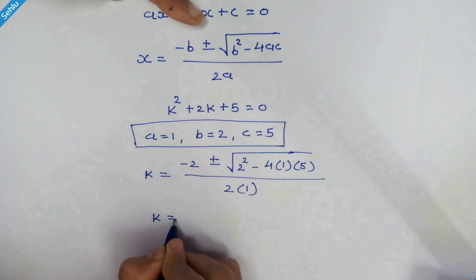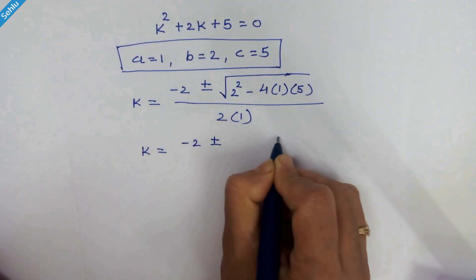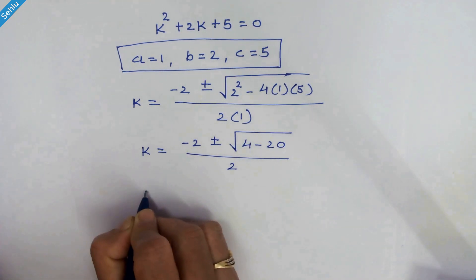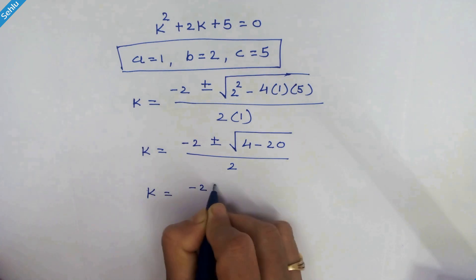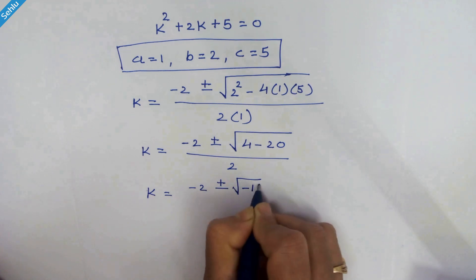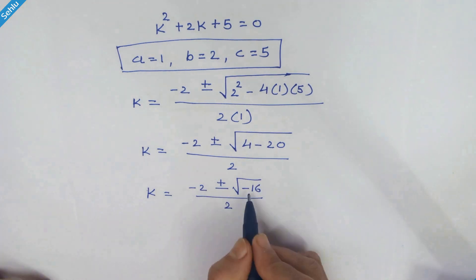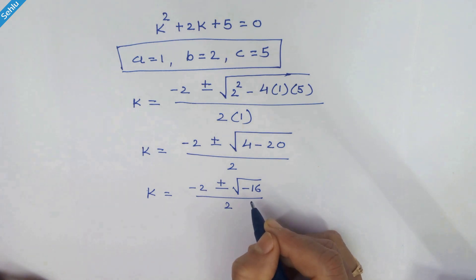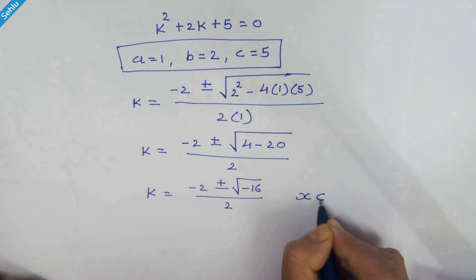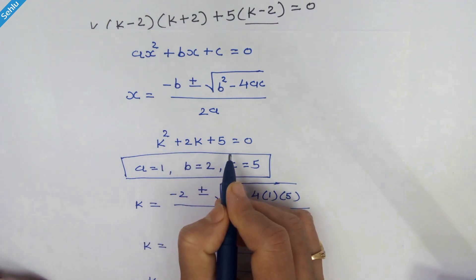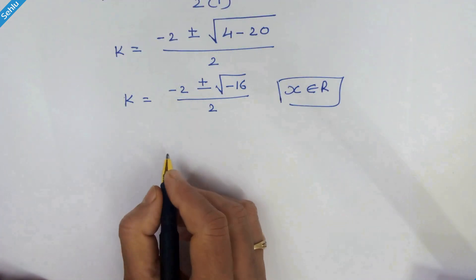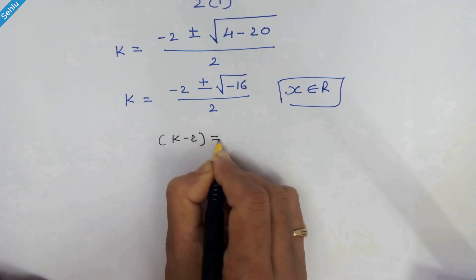So we have k equal to minus 2 plus or minus the square root of 4 minus 20, over 2. That gives k equal to minus 2 plus or minus the square root of negative 16, over 2. Here we have negative 16 under the square root, so this will have an imaginary result. But x must be a real number, so we have to drop this factor k squared plus 2k plus 5 equals 0, and follow k minus 2 equals 0.